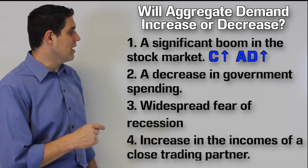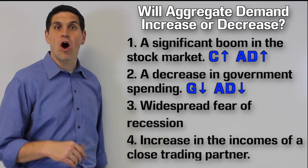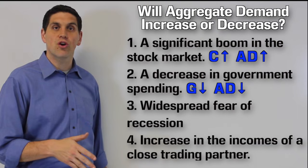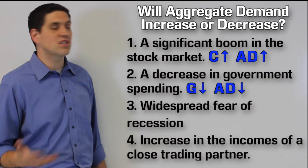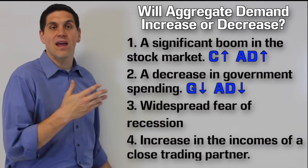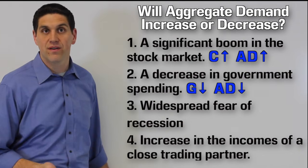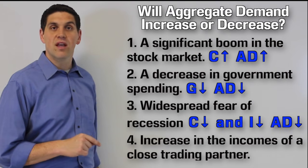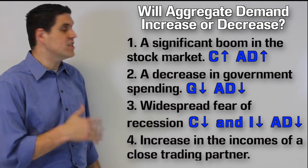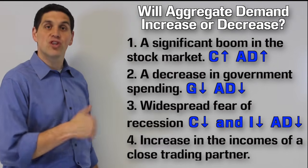A decrease in government spending would definitely decrease aggregate demand. Now keep in mind, this is government spending on goods and services — this is not spending on things like Social Security or other transfers not counted as part of GDP. So this would have to be something like a decrease in defense spending, which would cause aggregate demand to decrease or shift to the left. If individuals fear a recession, they're going to buy less stuff and consumer spending will fall; business spending or investment would also fall, so aggregate demand would shift to the left.